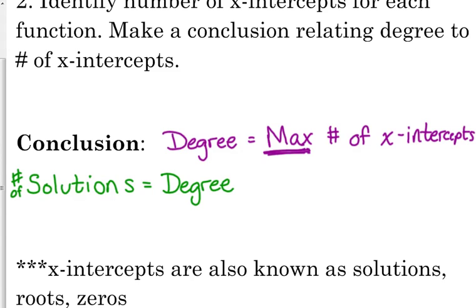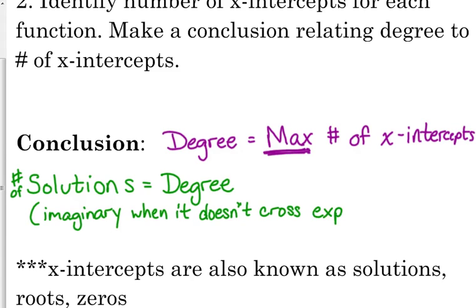We can have imaginary solutions. So, for example, let's say number 3 only has one x-intercept. That means it has two imaginary solutions. I'll just write imaginary when it doesn't cross the expected number of times. So, what I mean by that is if I have a fifth degree polynomial, I'm expecting 5 x-intercepts. So, when I graph it, if I don't have 5 x-intercepts, then that means I've got some imaginary solutions. And imaginary solutions always come in pairs. Always come in pairs. You're always going to have an even number of imaginary solutions.